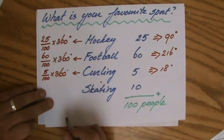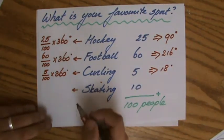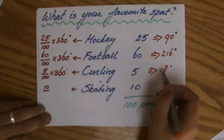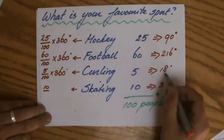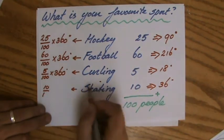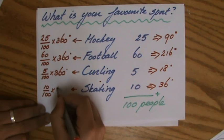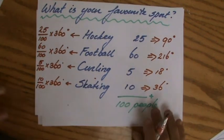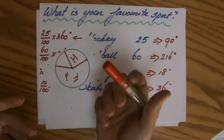For skating, 10 people like that, twice as much, so it's going to get twice 18 degrees, 36 degrees. 10 out of 100 is twice as much, so the angle is going to be twice the size. 18 degrees for curling.